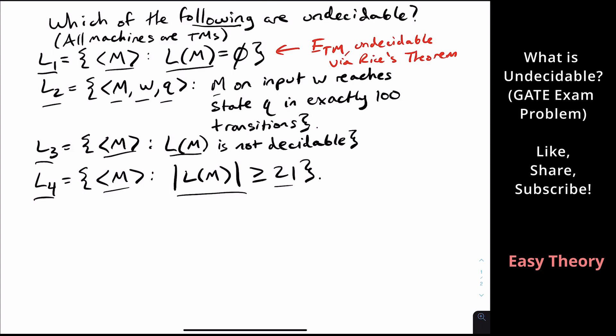You can also show it's undecidable in a number of different ways, such as assuming it were decidable and then producing a decider for ATM. And the way we did that was we had a machine that did one of two things. It either had empty language or had some other language depending on whether M accepts W. So it's undecidable.